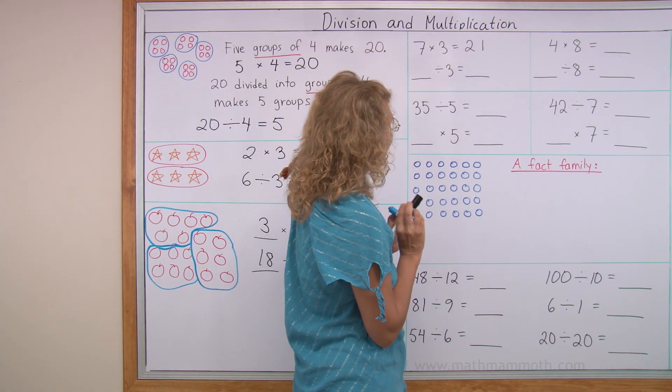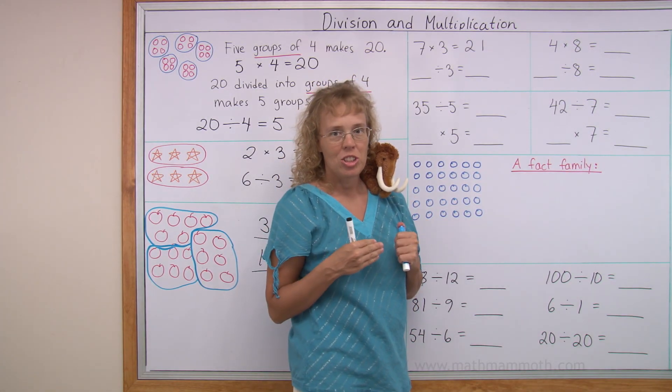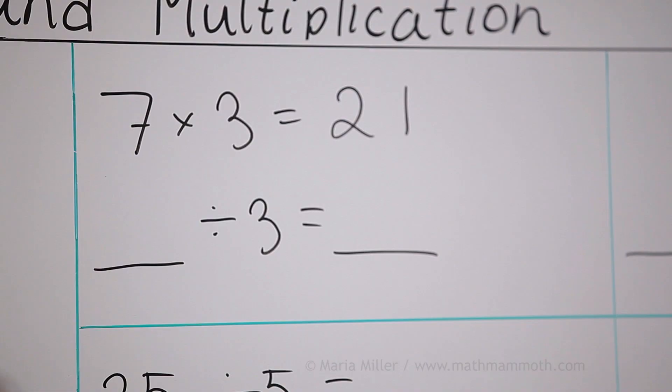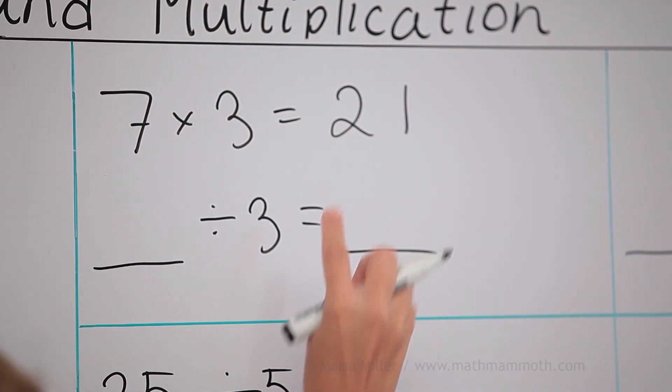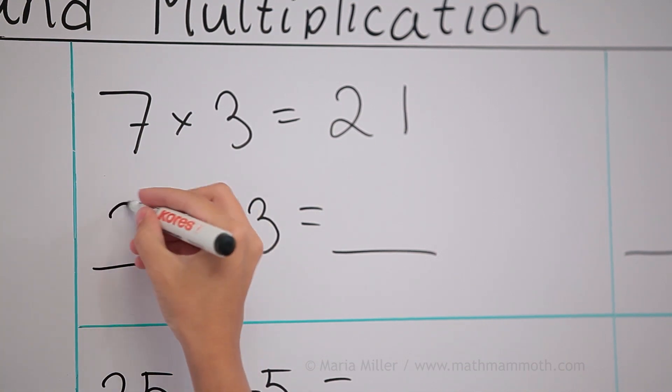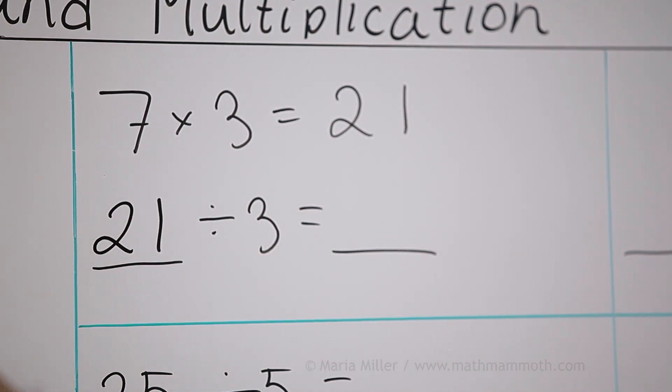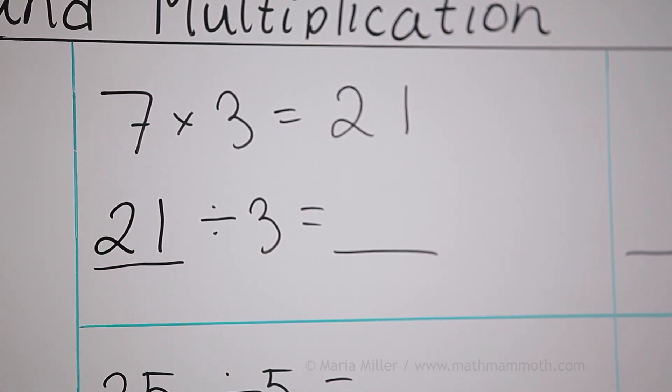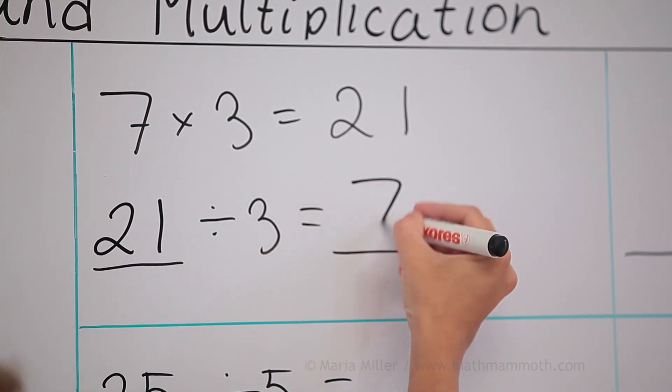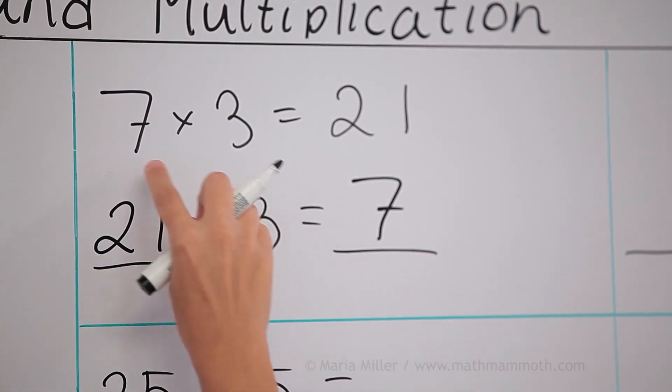Over here, our task is to write the matching division for the multiplication that's already given. Seven times three equals 21. So the matching division will be what? Start with the total here in division. Put 21 here. 21 divided into groups of three, and you get seven groups. It has the same numbers as what we used here.